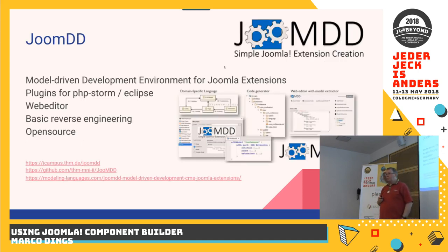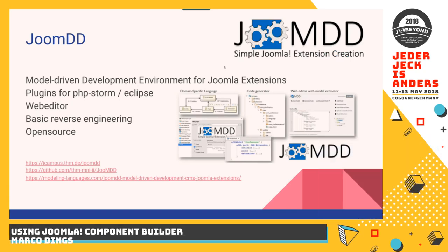There's this wonderful tool that's been presented since 2015 or even earlier: JoomDD, which is actually a model-driven tool. It abstracts your ideas and then generates the code out of it — meaning you could, in theory, create a Joomla, Drupal, or WordPress website going forward. It has nice plugins for PHPStorm and Eclipse, a web editor, and some basic reverse engineering. You can feed it any extension and it should be able to make a model out of it — though there are quite some limitations for that to actually work.